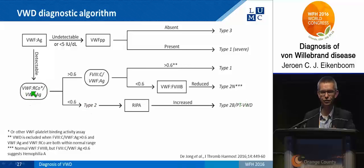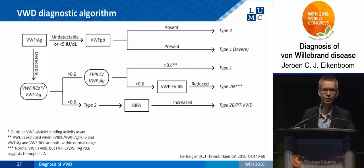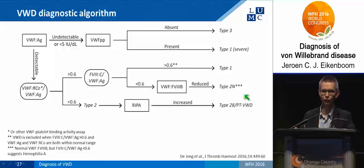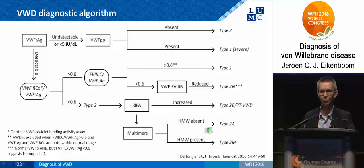When the ristocetin cofactor activity is much lower than the antigen — below 0.6 — we are dealing with a functional defect like type 2, and we subcategorize as 2A, 2B, or 2M. First we use the RIPA assay: if enhanced, it could be type 2B or platelet-type fulvirate disease, and at this point it is often confirmed by genetic testing. When the RIPA is normal or reduced, we need multimers to distinguish 2A from 2M. If the high molecular weight multimers are absent, it is type 2A; if they are present with a normal pattern, it is type 2M.